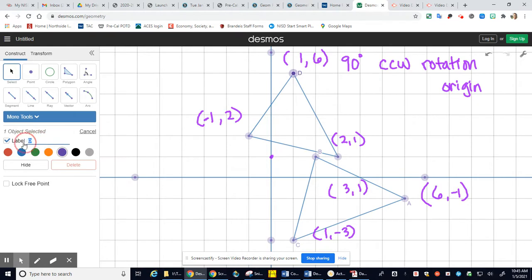This point is A prime because that's where A moved. This point here is B prime. And this point down here is C prime because that's where the C point has been rotated to.